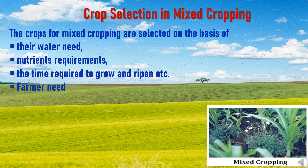Regarding crop selection in mixed cropping: it is generally believed that planting multiple crops simultaneously helps save space, as different crops ripen at different seasons. This technique also helps restore soil fertility, as the remains of one plant aid the growth of another, increasing overall yield. Crops for mixed cropping are selected based on their water needs during the season, nutrient requirements, and the time required to grow and ripen.